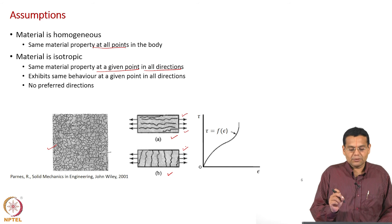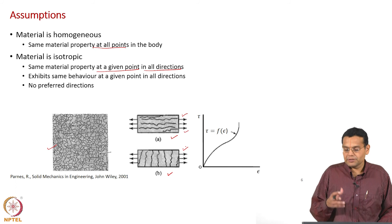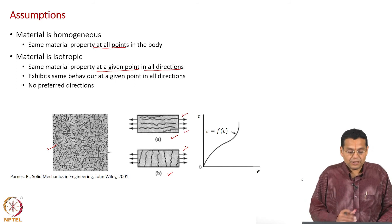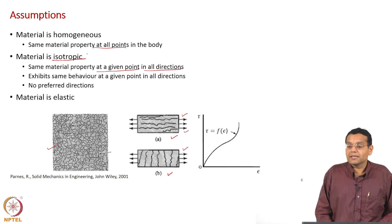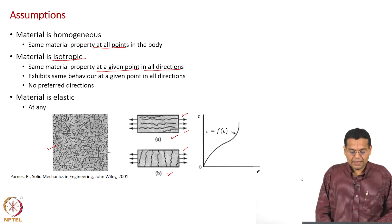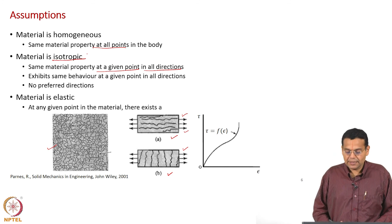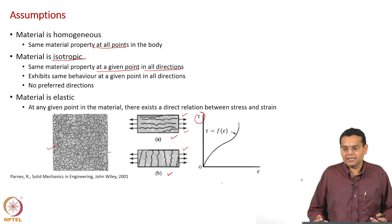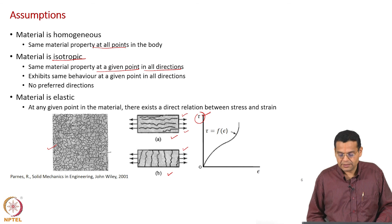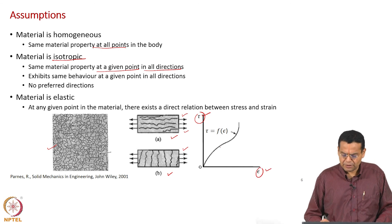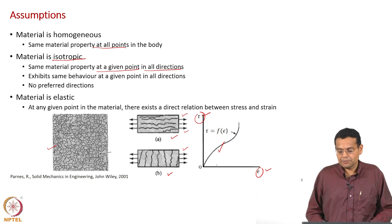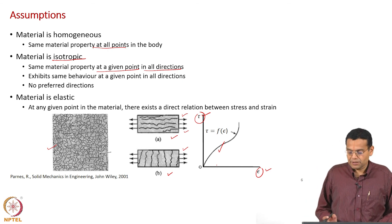To summarize: homogeneous refers to the same material property at all points throughout the body, while isotropic refers to the same material property at a given point in all directions — no preferred direction. The third assumption is that the material is elastic, meaning at any given point in the material there exists a direct relationship between stress and strain. This relationship could be nonlinear or linear, shown as stress as a function of strain: tau is a function of epsilon.